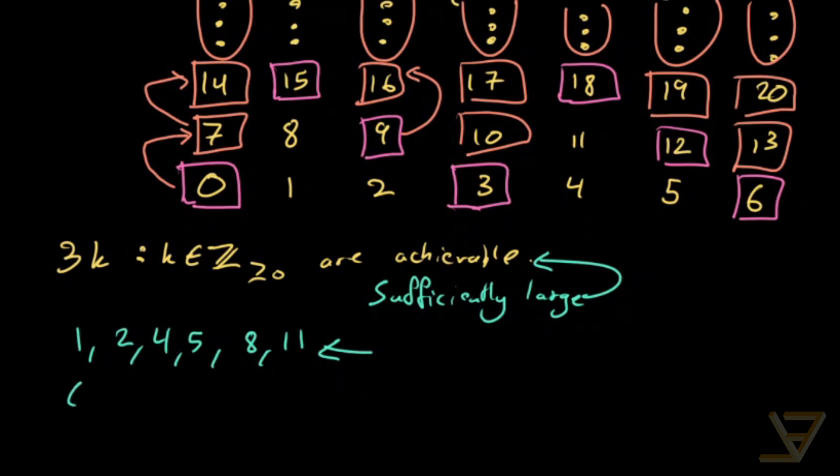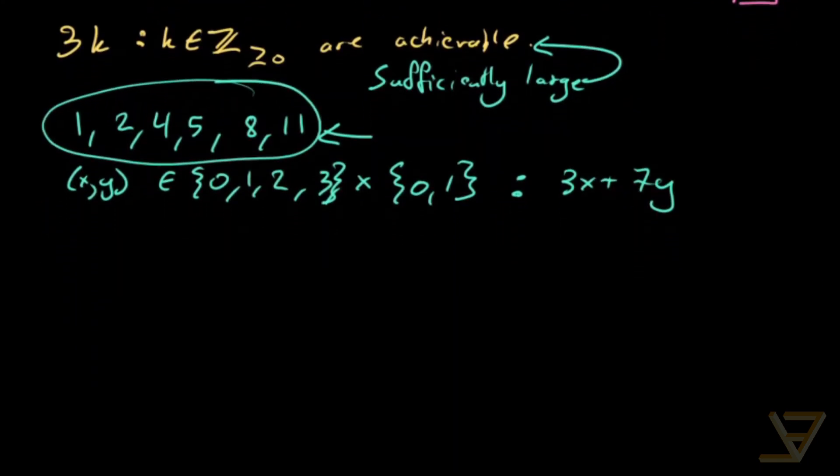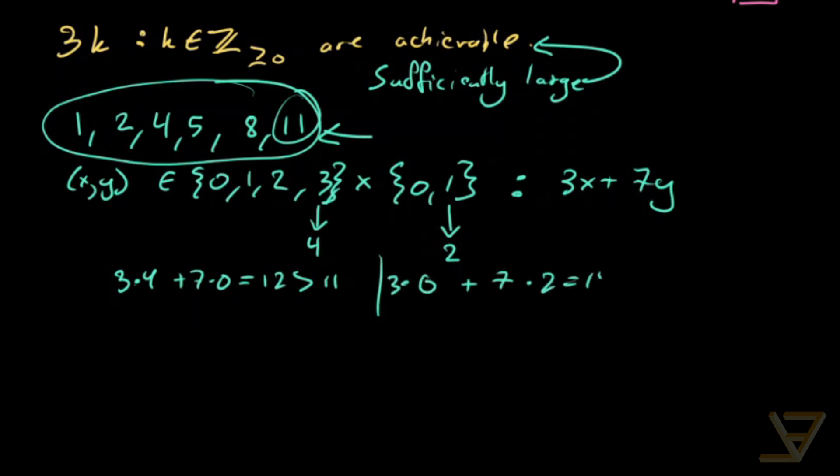The reason is that we can look at x and y in 0, 1, 2, 3, Cartesian product with 0, 1, and look at 3x plus 7y. And none of them are going to work out to these numbers. And we don't have to look any further than that, because if this were to be, if we chose 4 here, or 2 here, then we would get 3 times 4 at least, plus 7 times 0 is equal to 12, which is greater than 11, which is the highest one here. Or we would get 3 times 0 plus 7 times 2, which is 14, and that's also greater than 11. So we found all the non-achievable numbers, and we've also found all the achievable numbers.